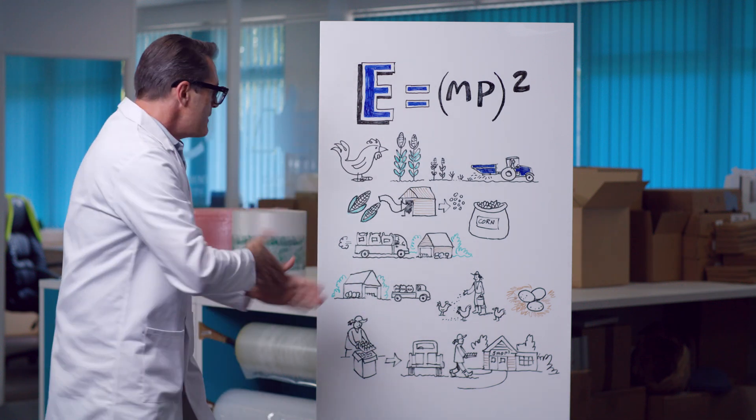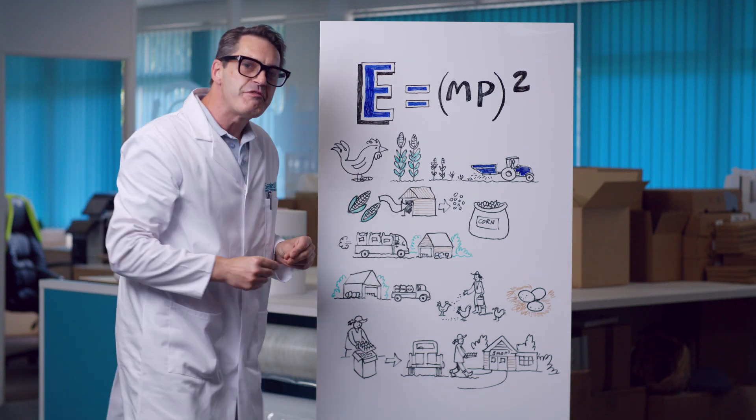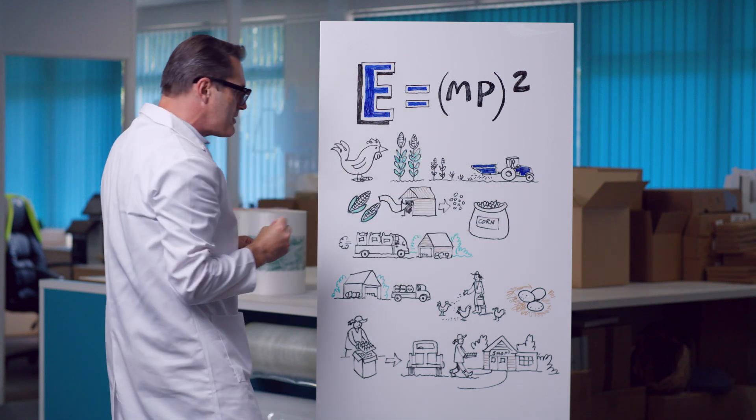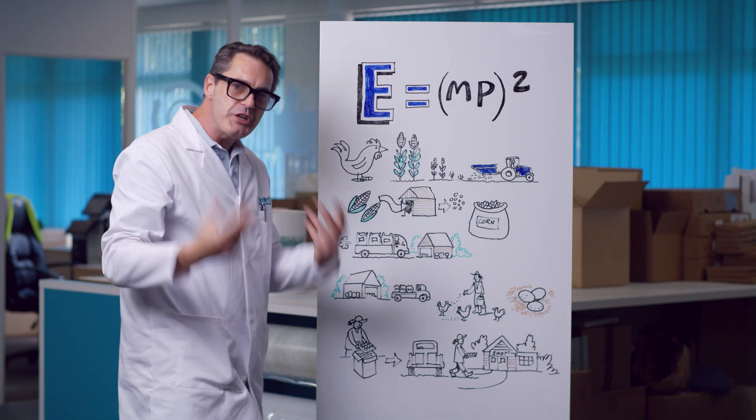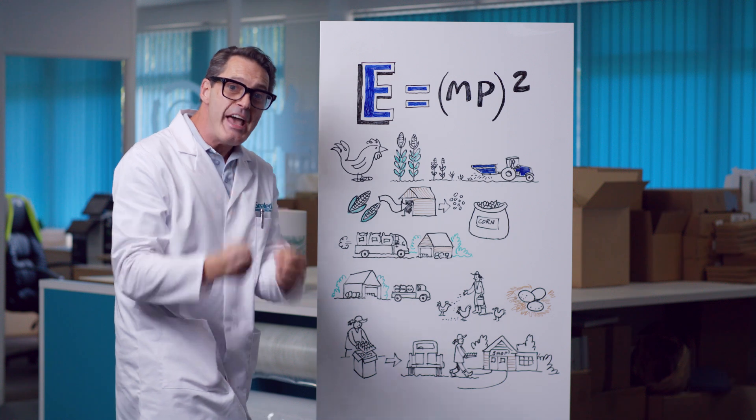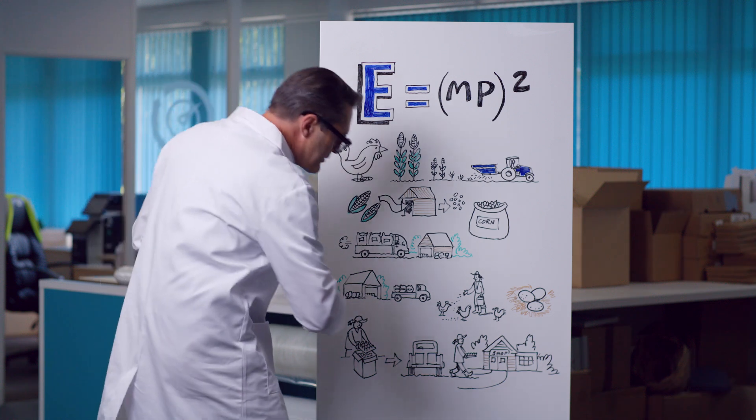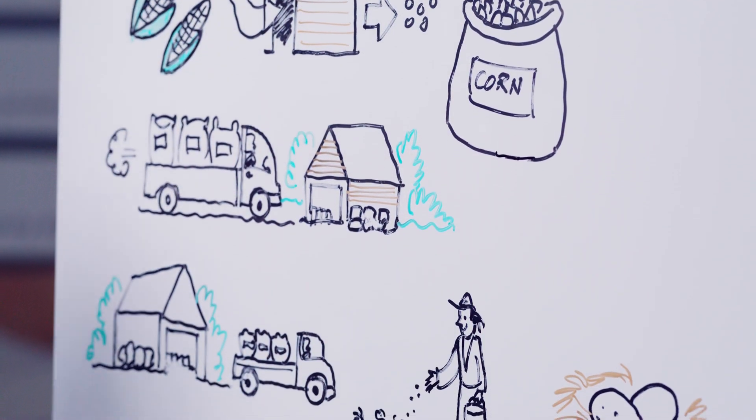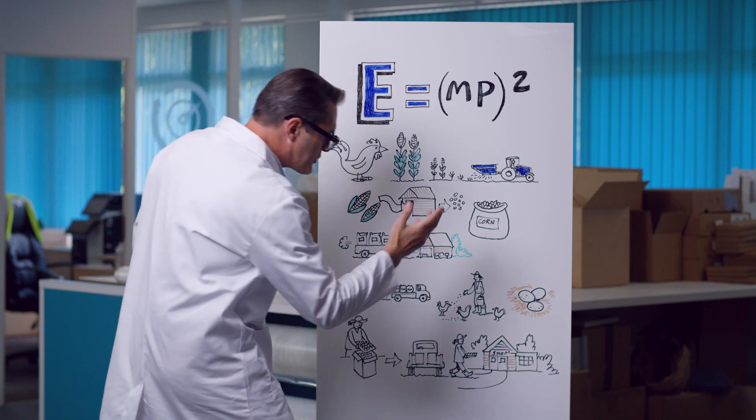So, the chicken needs to be fed, which means corn has to be grown and processed into chicken feed. That processing takes energy. Now, that chicken feed is then sent to a reseller, and then once again, transported to a chicken farm.